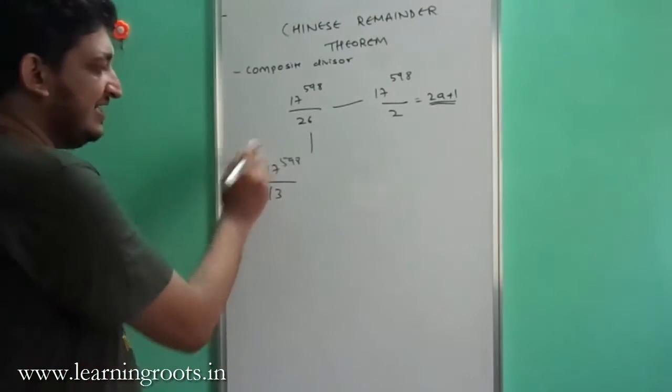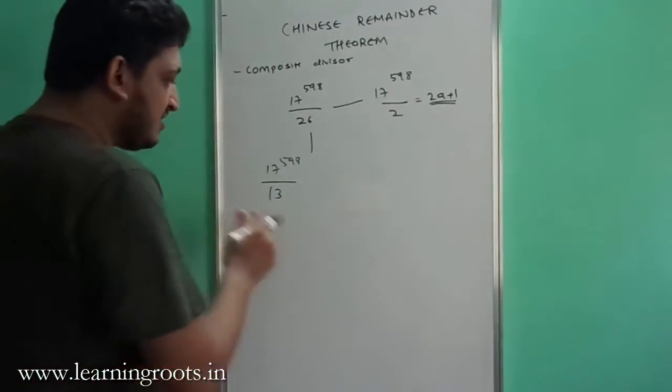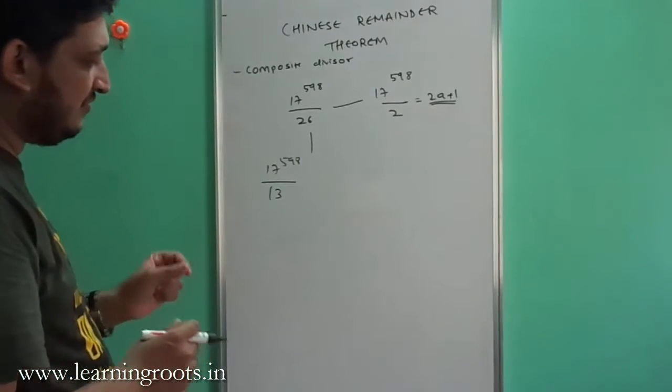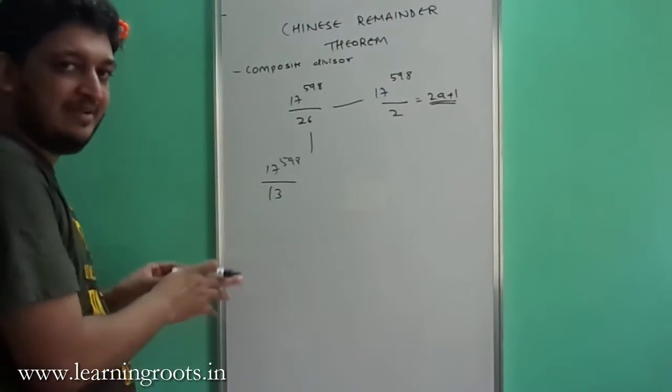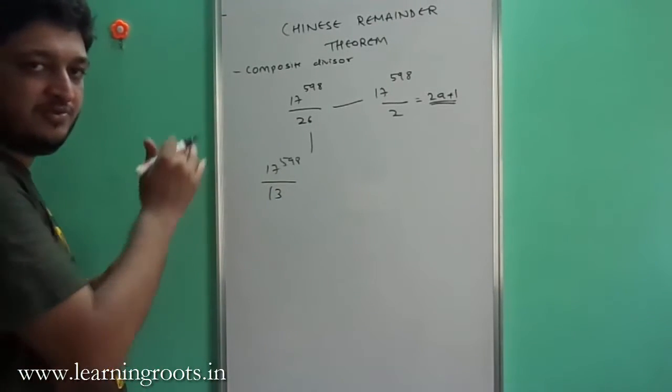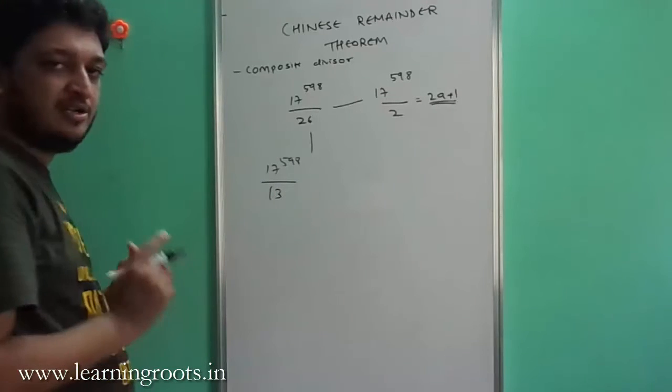Now coming to the second part, 17 raised to 598 mod 13. If you see the Euler coefficient of 13 is 12 because it is a prime number, and so phi minus 1 will be 12. So 17 raised to anything which is in the form of 12k will always give a remainder of 1.